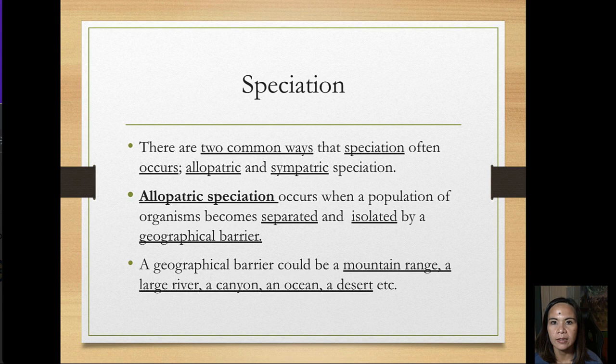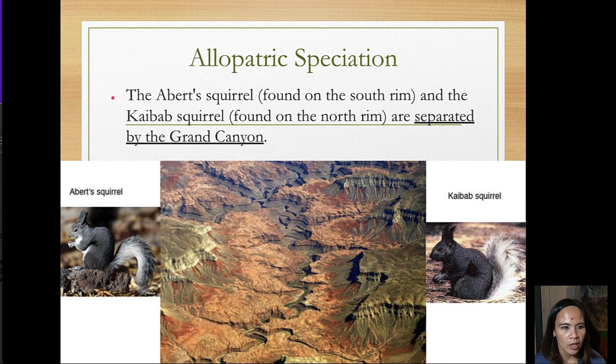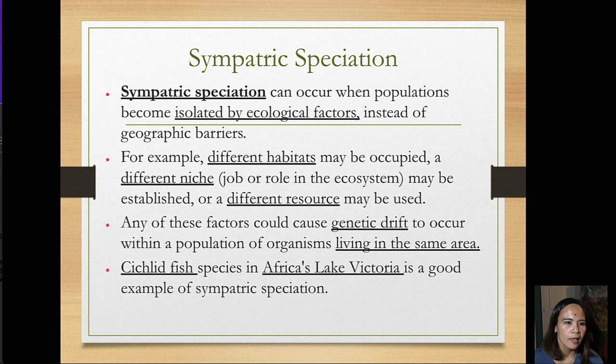There are two common ways that speciation occurs: allopatric and sympatric speciation. Allopatric speciation occurs when a population becomes separated by a geographical barrier such as a mountain range, large river, canyon, ocean, or desert. An example is the Abert's squirrel on the south rim and the Kaibab squirrel on the north rim of the Grand Canyon, separated by the canyon itself.